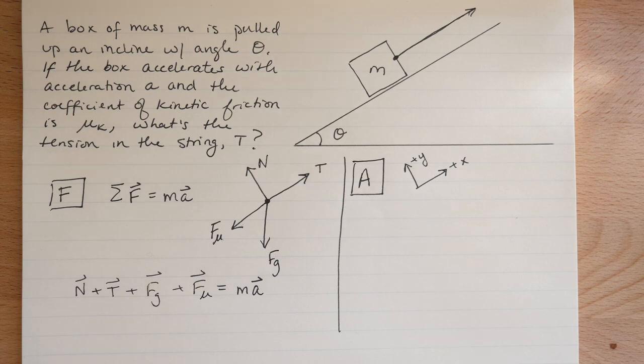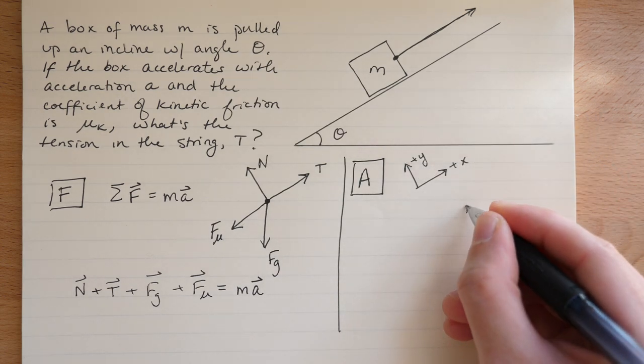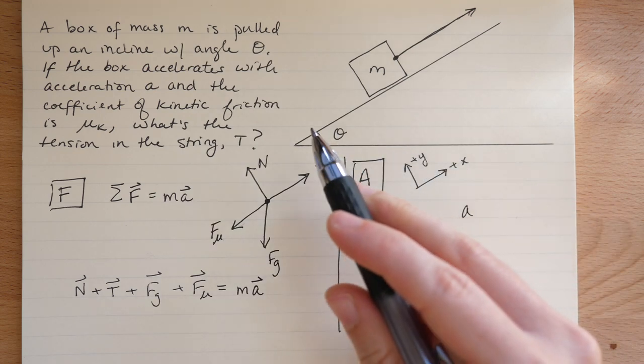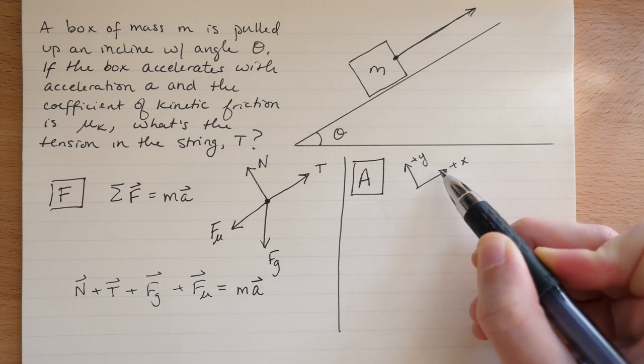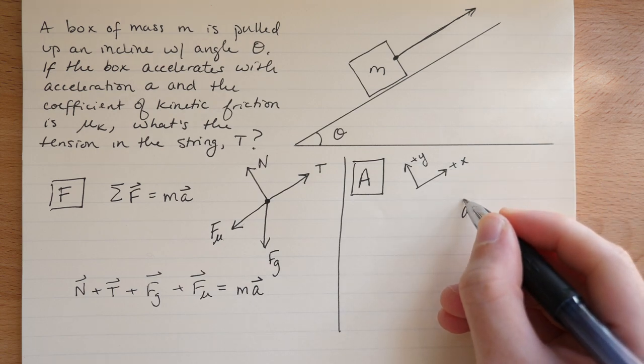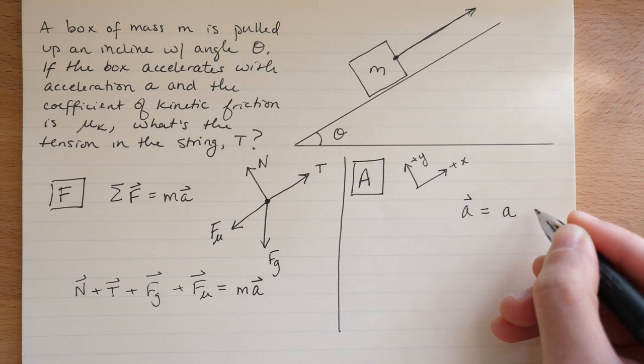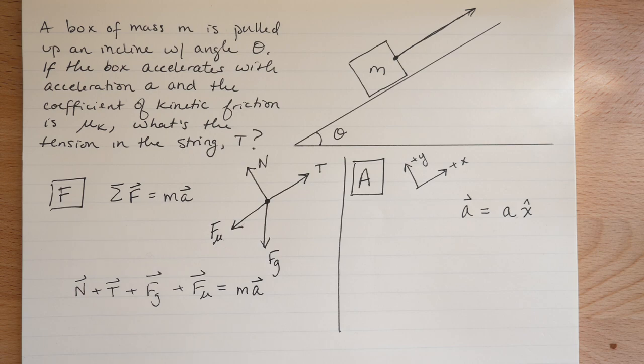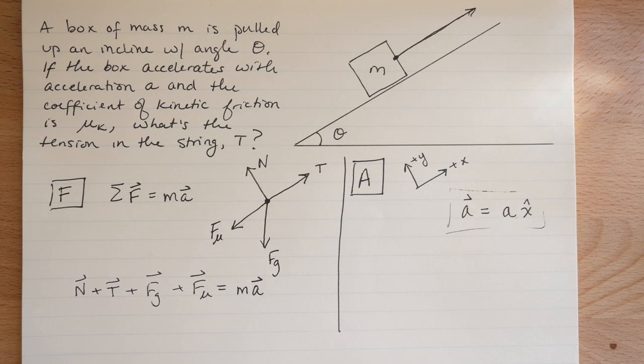Now we need to ask, how is this object accelerating? Well, we know what the acceleration is. The acceleration is A, and it's up the ramp. So the acceleration is in the positive X direction. So if we were to write the acceleration as a vector, we would say the acceleration is A, and it's in the X-hat direction, so we multiply it by X-hat, and that's our acceleration vector.